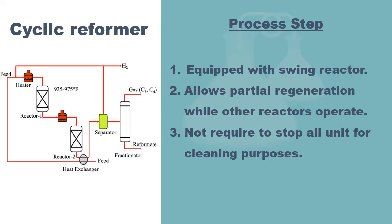The third configuration is the cyclic reformer. This configuration is equipped with a swing reactor, which allows partial regeneration while the other reactors continue to operate. This avoids stopping of all units for cleaning purposes.